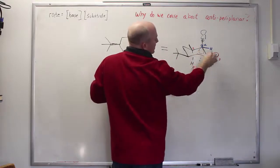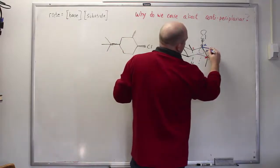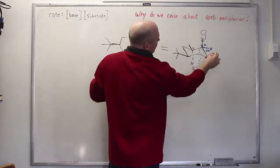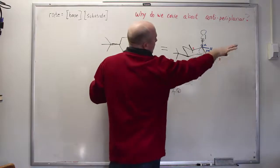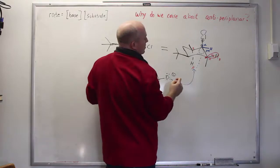The orbital that this sigma bond, the sigma star orbital that this would need to overlap with, is down vertically in the back. There's no overlap between the sigma orbital here and the sigma star orbital. If you try to abstract this hydrogen there's nowhere for these electrons to go.